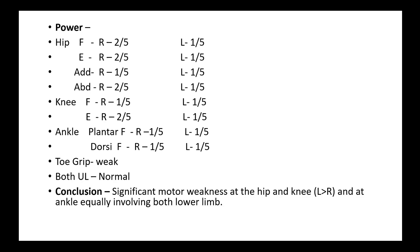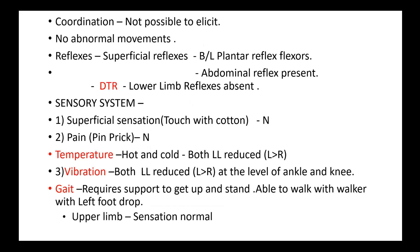Coordination: not possible to elicit. What abnormal movements do we expect? Fasciculations. Fasciculation is a sign of degenerating anterior horn cells, or even motor roots, or motor components of the peripheral nerve. Fasciculation is a positive symptom — when the anterior horn cell is dying, it leads to wasting. In the early stages, there is a positive symptom of fasciculation, very commonly seen in anterior horn cell disease, but it can also be seen in motor nerve or motor root irritation.